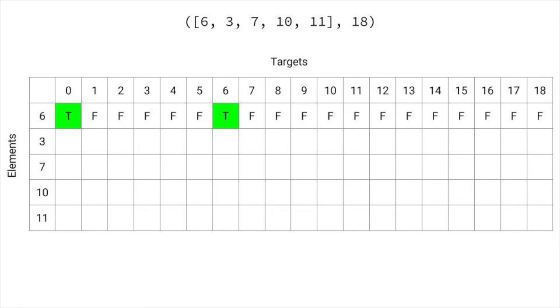How do we fill in the second row? For each true in the first row, we mark true in the second row in two places, the same column, and the column plus the value of the element in the row we're currently filling. Here for example, for the true at 0, we fill in trues at 0 and 0 plus 3. For the true at 6, we fill in 6 and 6 plus 3 or 9. We can reach every size we could reach with the first item, and for each of those sizes, we could also use the second item and reach those values.